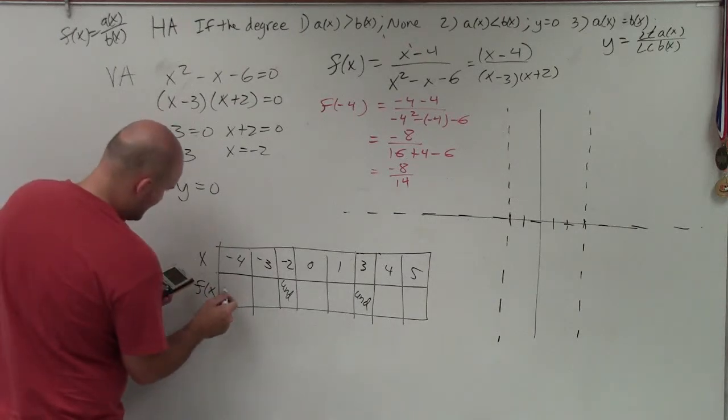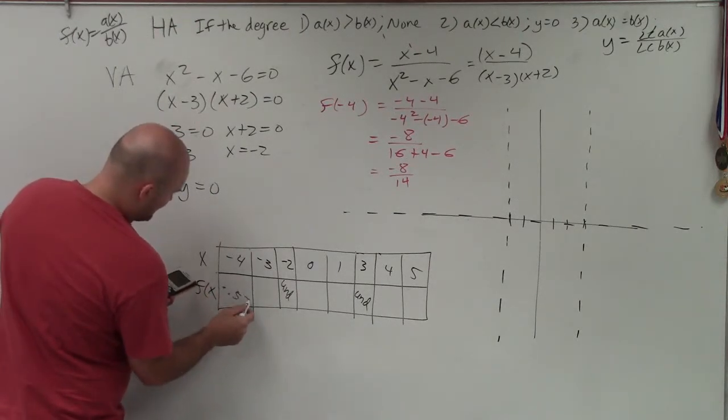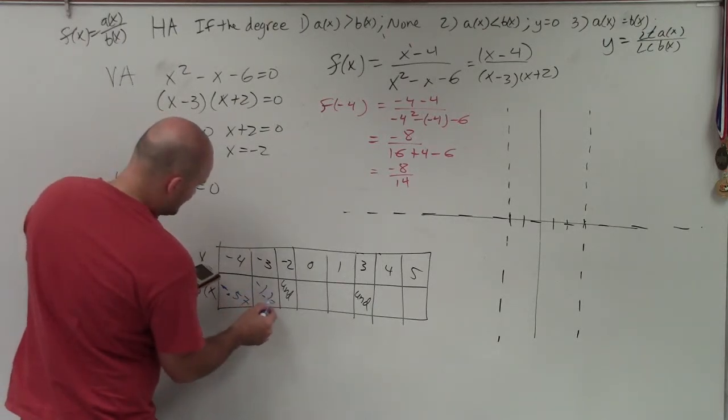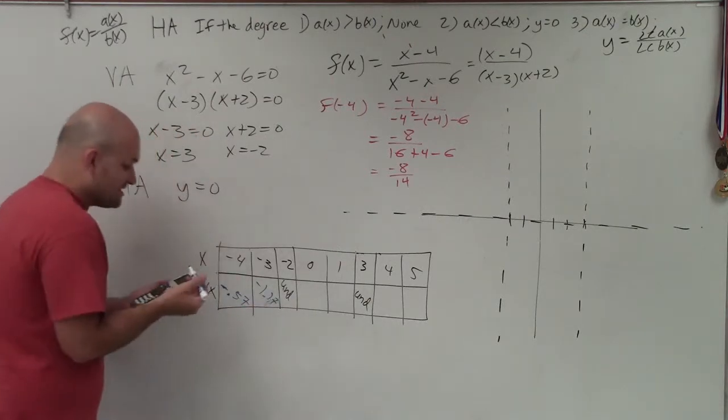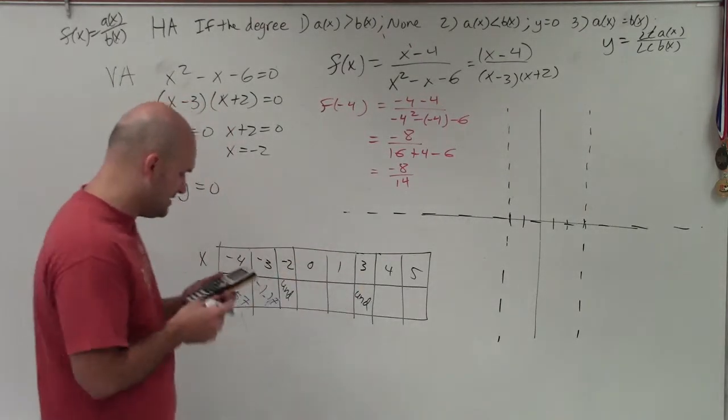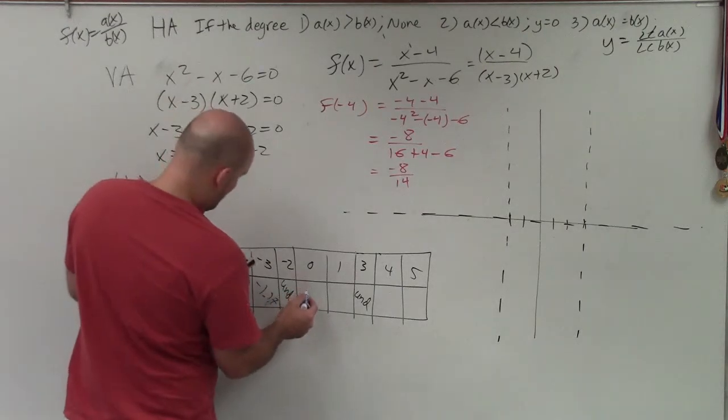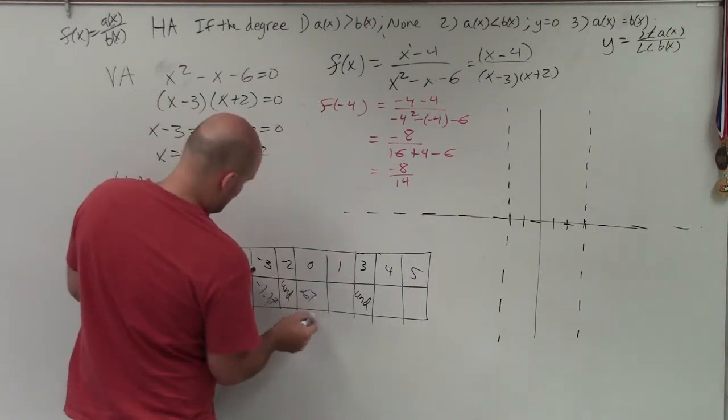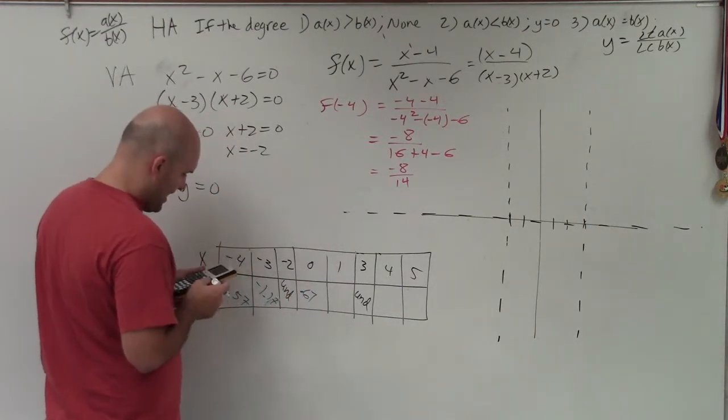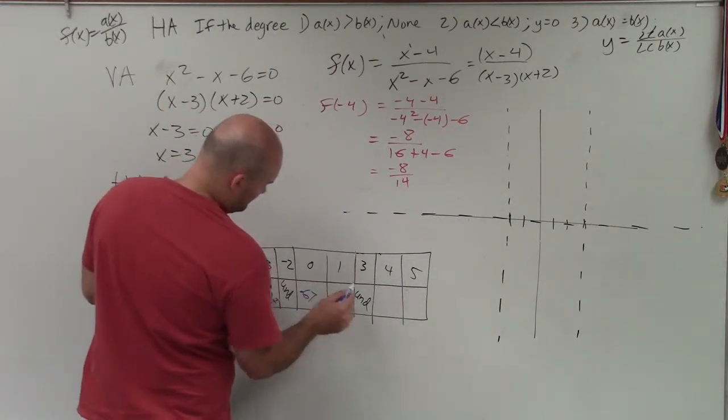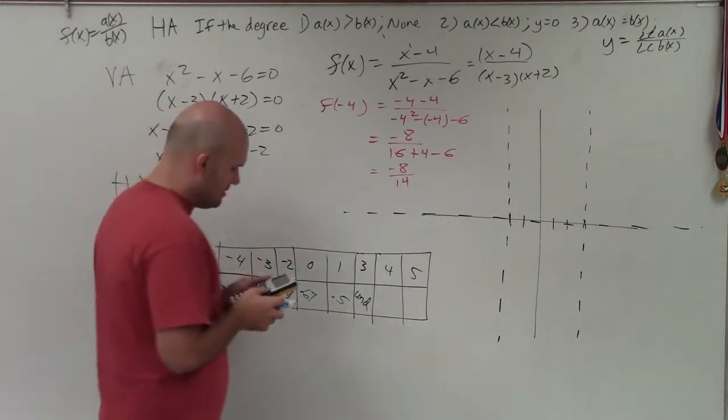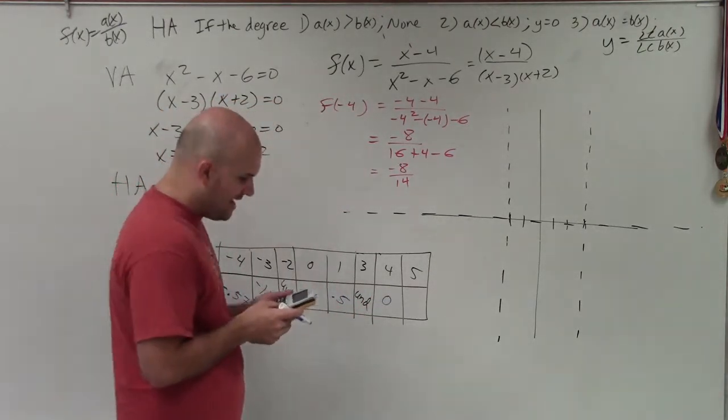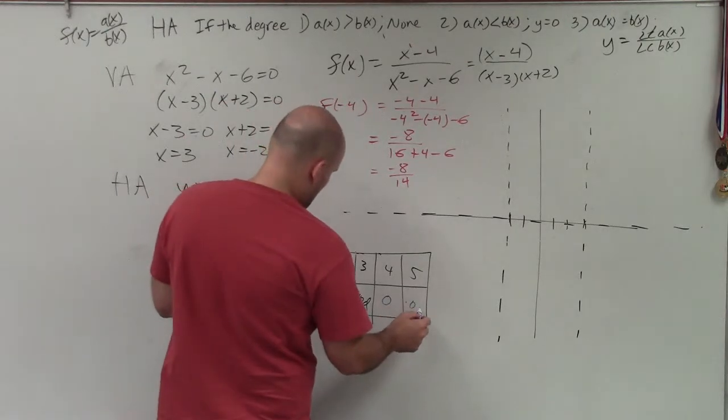And I'll just do it to the 10th here. So I have negative 0.57. For at negative 3, I have negative 1.17. And you can see at negative 2, it's undefined, or it says error, because that's where the asymptote is. At 0, I have 0.67. At 1, I have 0.5. At 4, I have 0. And at 5, I have 0.07.